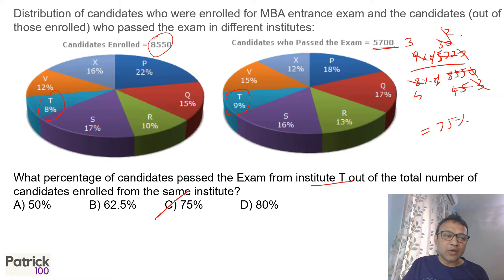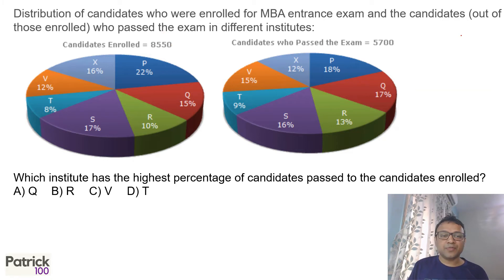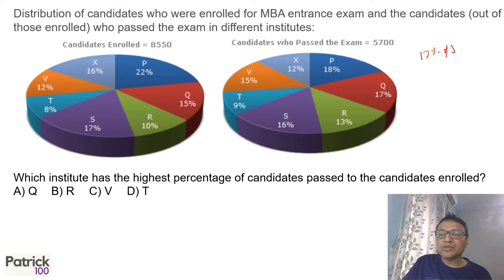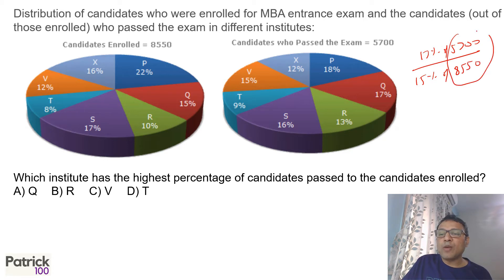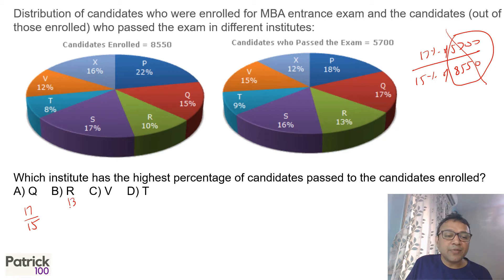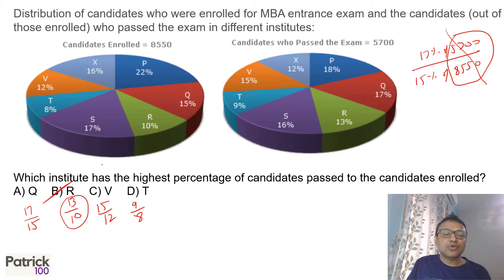Just calculations — be good at calculation. Now we need to solve which institute has the highest percentage of candidates passed to candidates enrolled. When comparing values, you can ignore the common calculation. For Q it is 17 upon 15, for R it is 13 upon 10, for V it is 15 upon 12, and for T it is 9 upon 8.